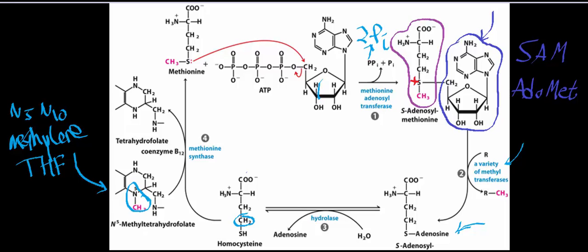Then methionine gets an adenosine group added to its sulfur by methionine adenosyl transferase. Notice that per cycle, this consumes one ATP. Your DNA constantly undergoes many methyltransferase reactions every time it replicates, and biosynthesis largely requires methyl transfer — including the synthesis of creatine, the synthesis of epinephrine, and the degradation of all catecholamines. This tells you it is so important that the cell is willing to spend one ATP per cycle of the SAM cycle. It's energetically expensive but absolutely vital to the cell.